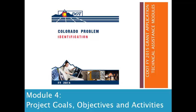You may want to visit Module 2, which is the problem identification section where we introduce the data that we use to base our project, and then Module 3, which is the project rationale section where we narrow down the list of options that we want to concentrate our project on. And now we'll get started with project goals and objectives and activities.